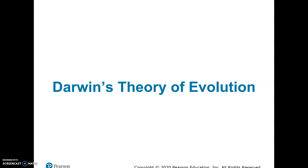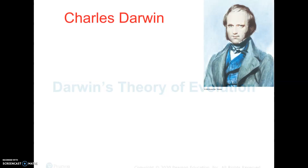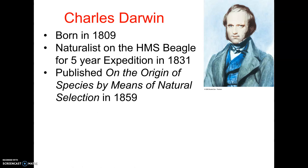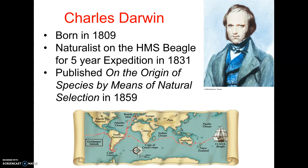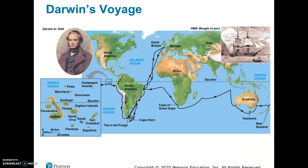Charles Darwin is considered the father of evolution because he came up with a theory we still believe today. He was born in 1809 and was a naturalist — he studied nature. He was brought along on a ship called the HMS Beagle on an expedition. He went to the Galapagos Islands specifically, which you can see on this little map here. He published a book called On the Origin of Species by Means of Natural Selection, which was about something he called natural selection.